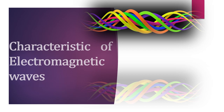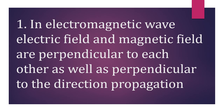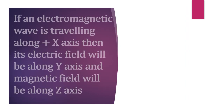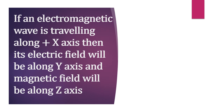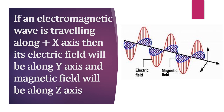Characteristics of electromagnetic waves. First: in an electromagnetic wave, the electric field and magnetic field are perpendicular to each other as well as perpendicular to the direction of propagation. This means that if an electromagnetic wave is traveling along the positive x-axis, then its electric field will be along the y-axis and magnetic field will be along the z-axis. You can see in the figure that electric field and magnetic field are both perpendicular to each other as well as perpendicular to the direction of propagation.